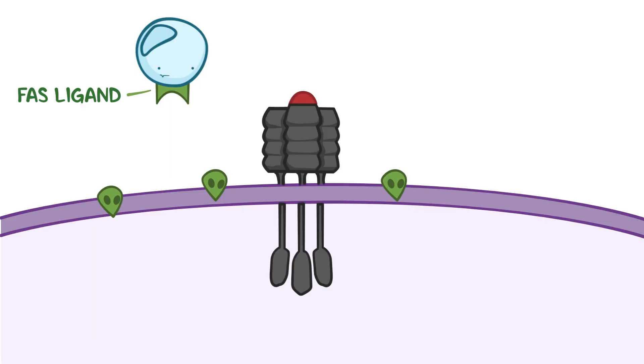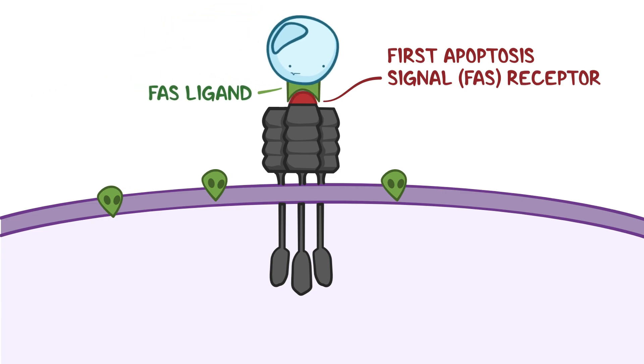In addition to macrophages, if a cytotoxic T-cell detects that a cell is expressing foreign antigens, the T-cell will express a protein on its membrane called FAS-ligand, which binds to a death receptor on the target cell called the first apoptosis signal receptor, or FAS receptor.